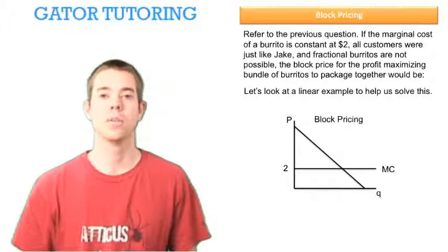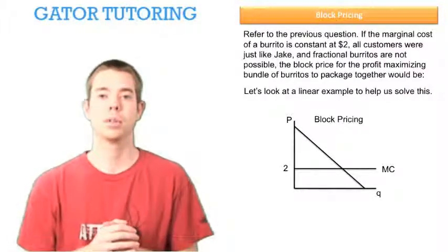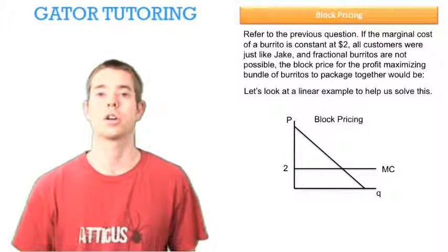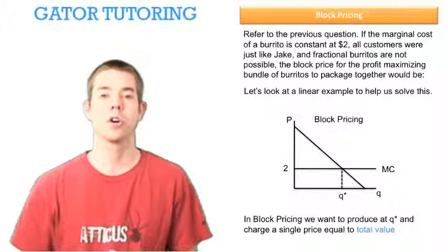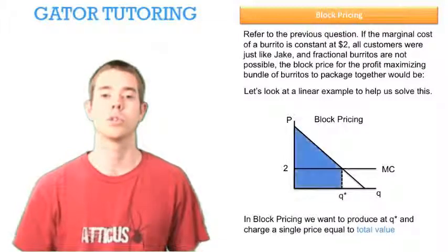First, let's look at a linear example to help us organize our thoughts. In block pricing, we want to extrapolate all the consumer surplus and cover all our cost. So we want to produce at Q star units, and then we want to charge a single price equal to this whole blue area.